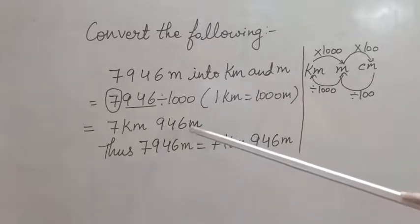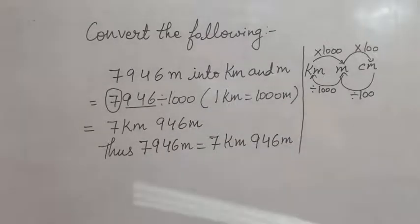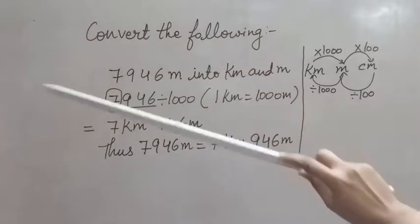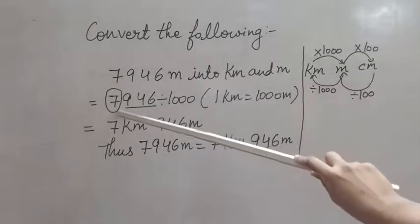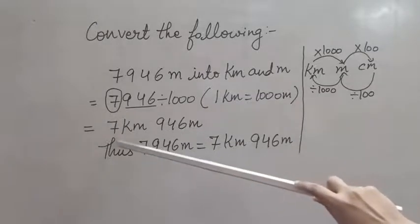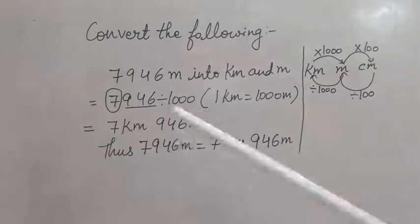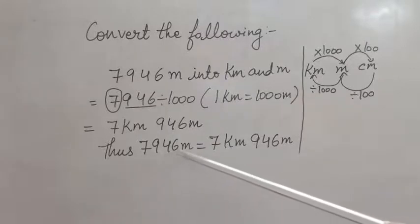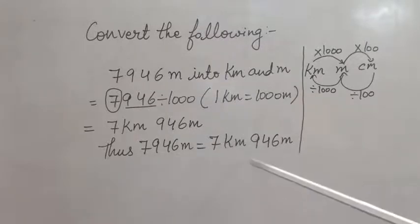Now what is left? Only seven is left, so seven will be my quotient and I will be writing it as kilometer. So in this way I can write in the end: 7946 meter is equals to seven kilometer 946 meter. I hope you understood. Thank you.